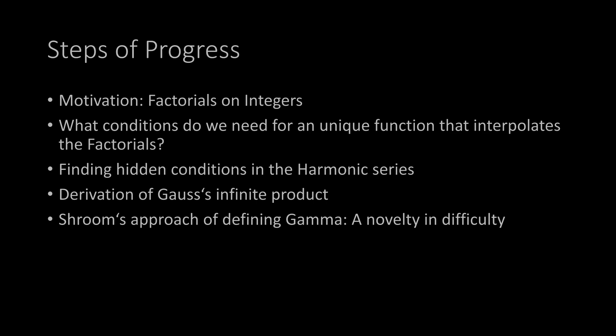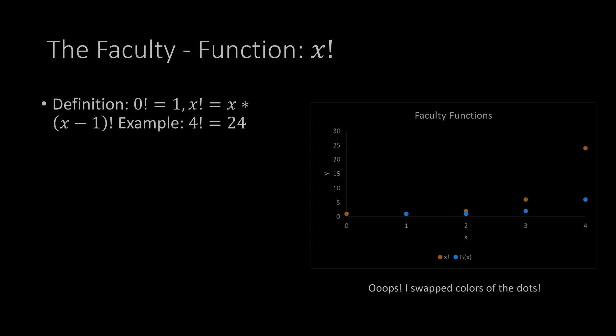So let's start with the factorial, the faculty function — x exclamation mark. On the right side you see a graph. The blue dots are x factorial: 0 factorial is 1, 1 factorial is 1, and x factorial is x times (x minus 1) factorial. An example is 4 factorial equals 24, because it's 4 times 3 times 2 times 1. Using that recursion formula you can insert it into itself and build up the chain.